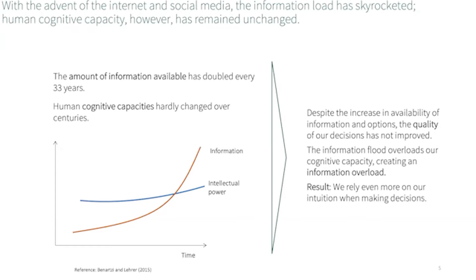In an information overload, we're unable to process the information available to us and thus rely on our intuition and use mental shortcuts to come to a decision. Looking at what is going on between our two modes of thinking, we can see that in such situations System 2 is overcharged by the available information and we tend to rely more heavily on System 1 to support our decision-making processes, which unsurprisingly results in lower decision quality. To prevent this from happening, scholars in different disciplines have put forth a variety of approaches to support human decision-making and to improve decision quality. Prominent concepts include persuasive technology, digital nudging and gamification.